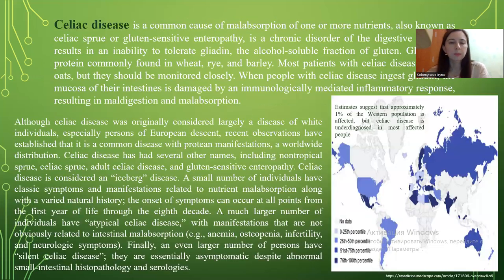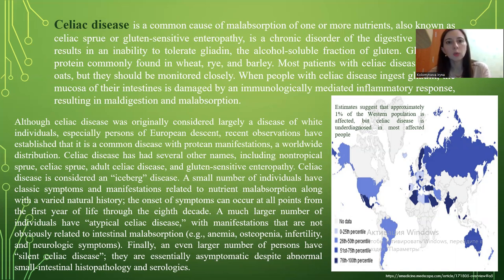And celiac disease. Celiac disease is a common cause of malabsorption of one or more nutrients, also known as celiac sprue or gluten-sensitive enteropathy. It is a chronic disorder of the digestive tract that results in an inability to tolerate gliadin, the alcohol-soluble fraction of gluten. Gluten is a protein commonly found in wheat, rye, and barley. Most patients with celiac disease tolerate oats, but they should be monitored closely. When people with celiac disease ingest gliadin, the mucosa of the intestines is damaged by an immunologically-mediated inflammatory response, resulting in maldigestion and malabsorption.